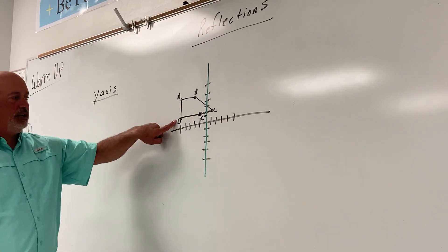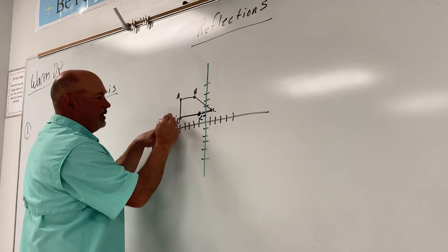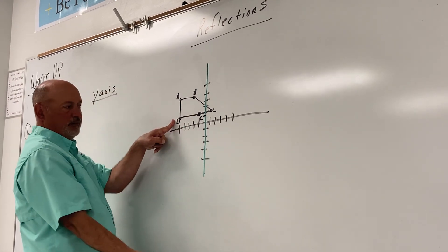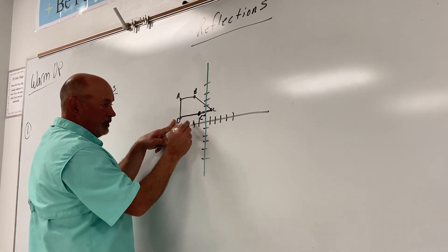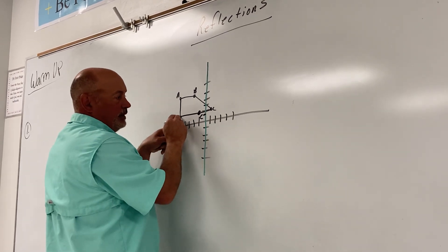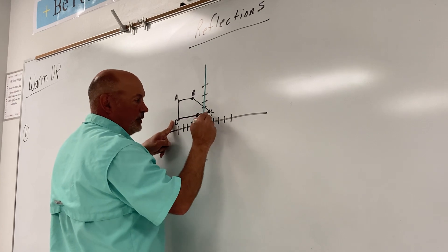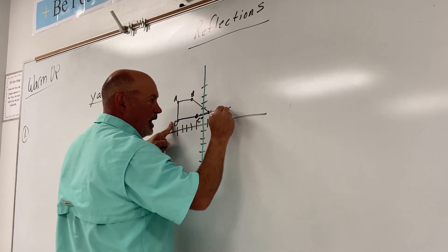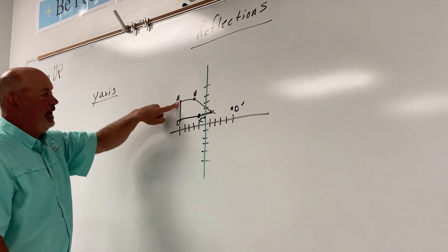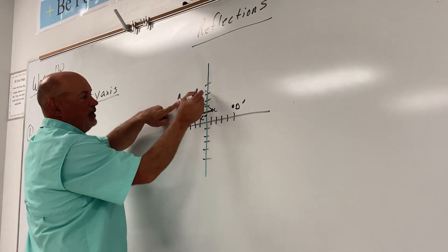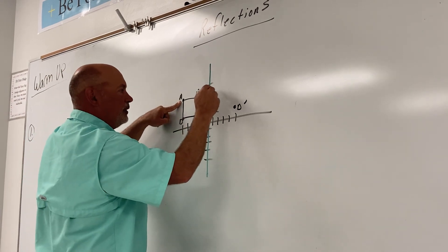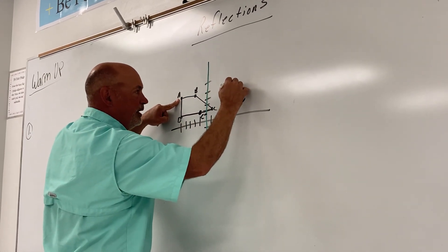Let's go to D — how far is D from the green line? Five to the right. One, two, three, four, five — D prime is going to go here. Let's go to A — how far is A from the green line? Five. One, two, three, four, five — A prime would be here.